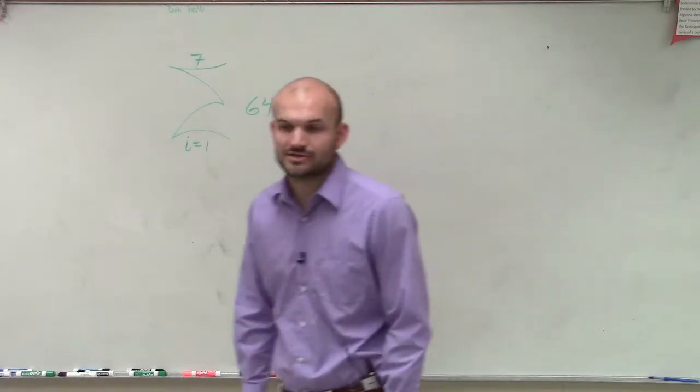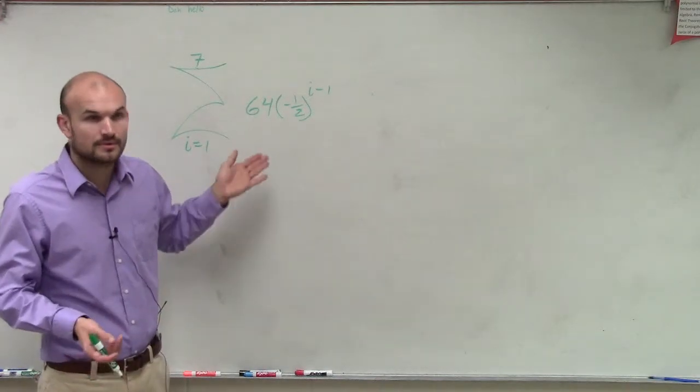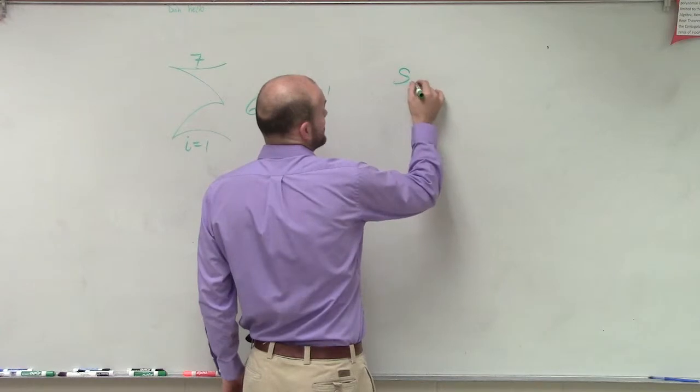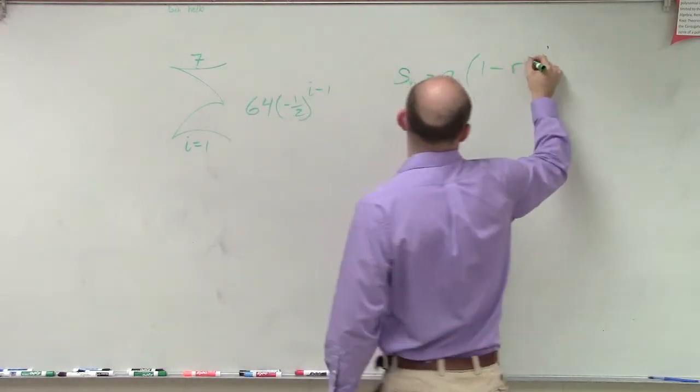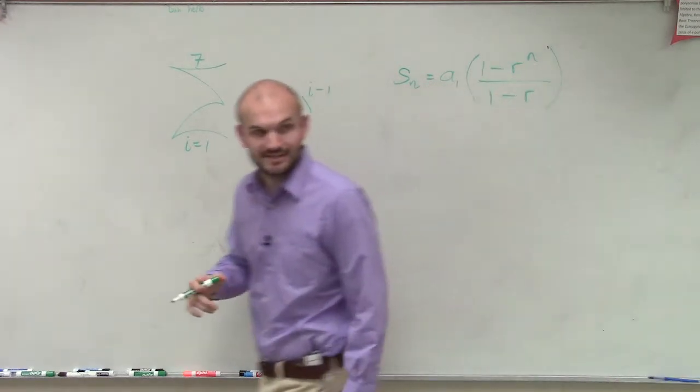So remember, when we're dealing with geometric series, we had a summation formula for finite sum. Your finite sum was s of n equals a sub 1 times 1 minus r to the n all over 1 minus r. This was for a geometric finite series.